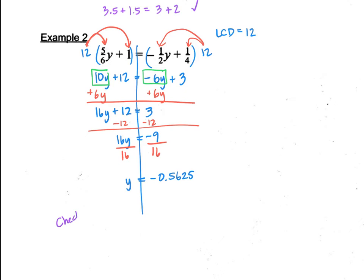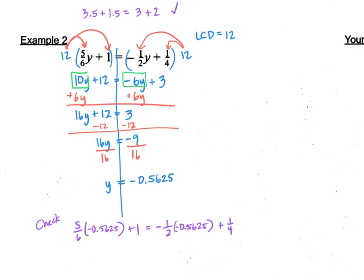If you want to check our answer, this one's not going to work out as nicely, but it should still work. 5 6 times the negative 0.5625 plus 1 equals negative 1 half times our answer y plus 1 fourth. So, I am going to just have you finish checking that answer, but it should equal. Go ahead and try the your turns that I'll put up here. Here are two problems for you to try out. Go ahead and pause the video. I'm going to start working on these now. So, try them out before you see the answer.